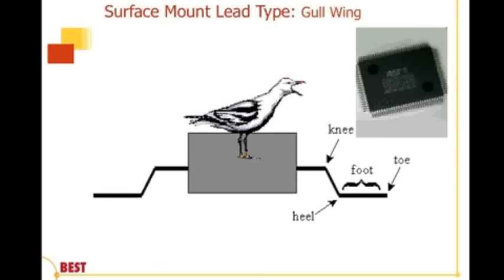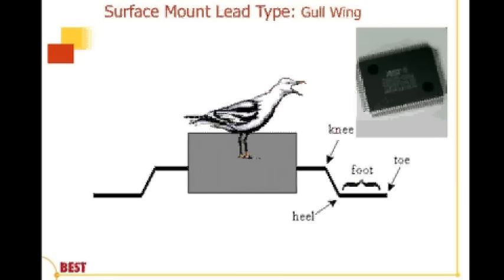Let's talk about the different lead configurations. First up is the gullwing lead. We see this cartoon of a seagull on the component, with the leads coming out of the component body — it looks like a human leg. Following the leg down, we see the knee, the foot, the toe, and the heel, describing the different areas of the component lead. In the upper right you'll see a gullwing-leaded component with this type of lead.